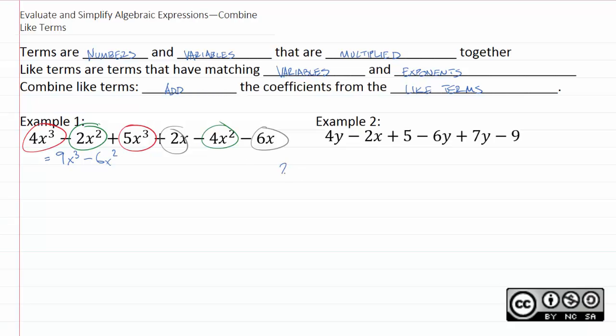As for 2x minus 6x, again 2 minus 6 is negative 4. And therefore 2x minus 6x is negative 4x. So again with combining like terms you just identify things that match and put them together.